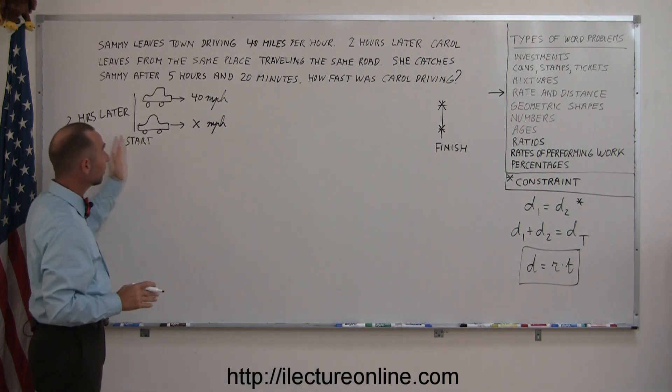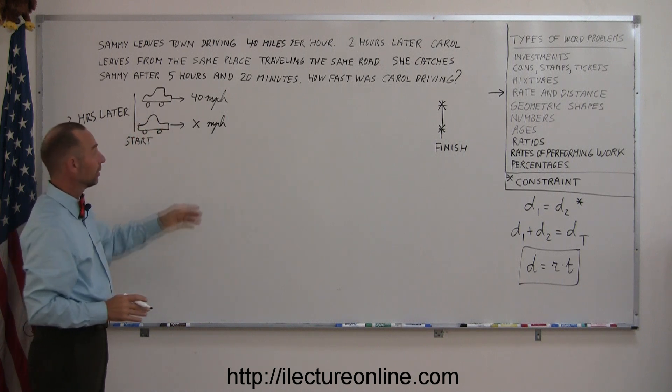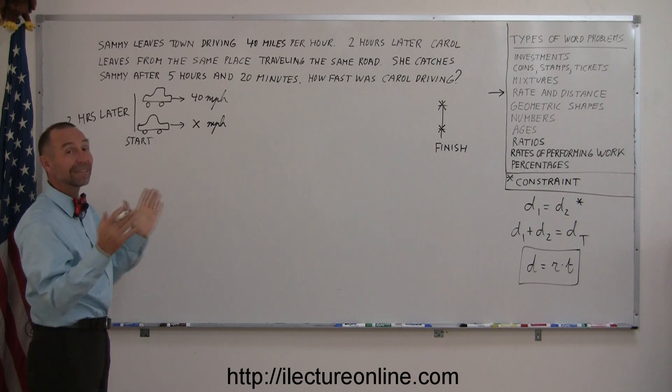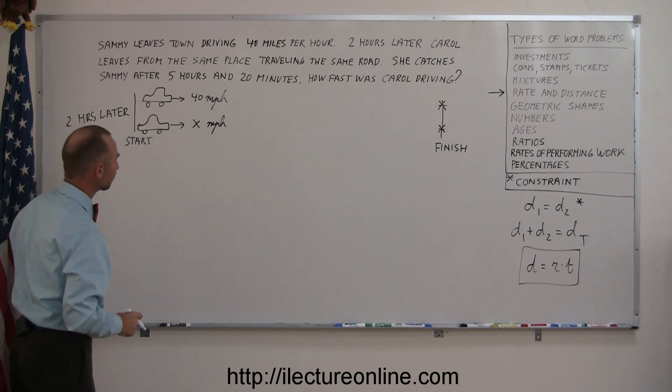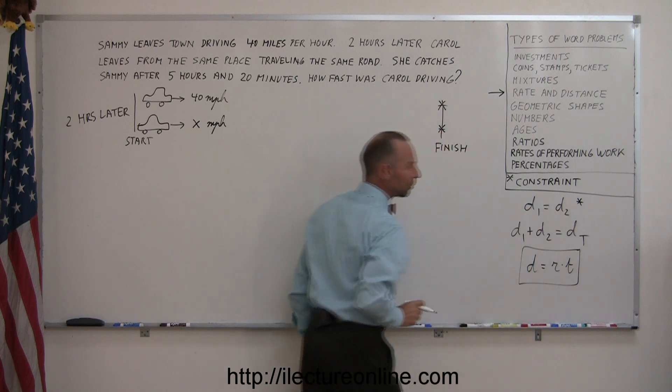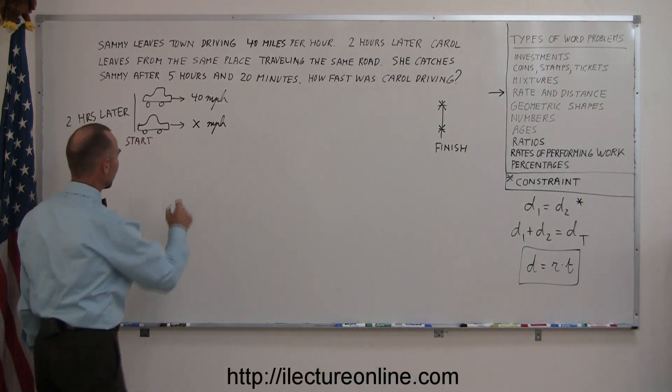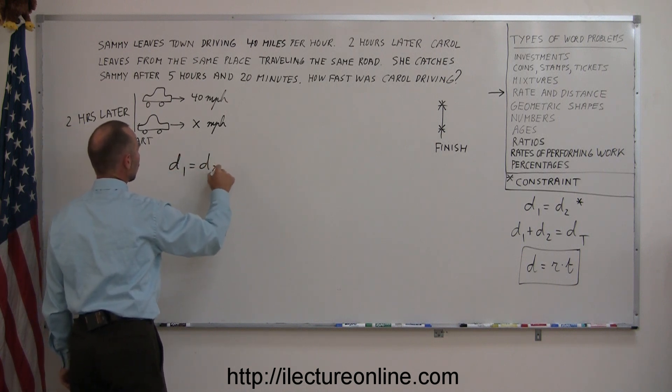So you can see that in this case, both of them drive the same amount of distance. However, Carol drives faster and takes less time to get there. So that's why this equation here, this approach to the problem really works. They both travel the same distance. So we can write distance 1 equals distance 2.